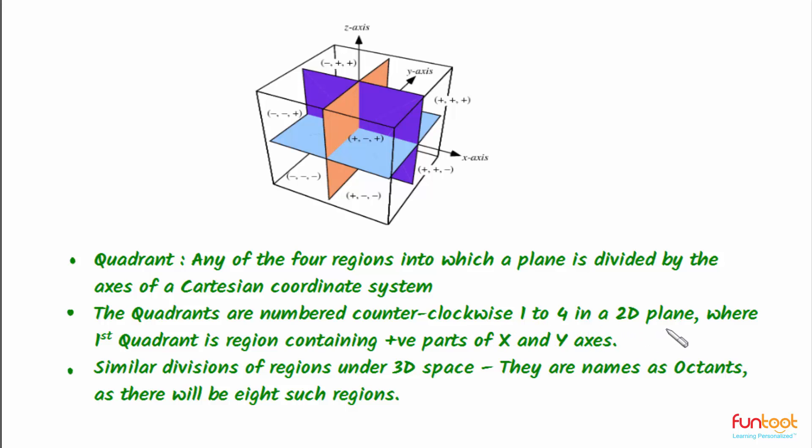The first quadrant is a region containing positive parts of X and Y axes. Similar divisions of regions are there in 3D space. They are named as octants, as there are eight such regions.